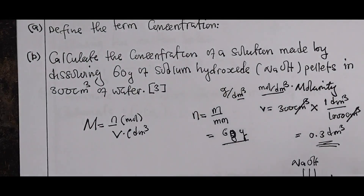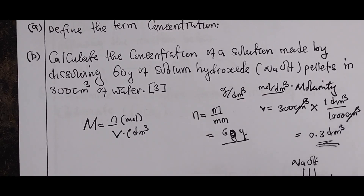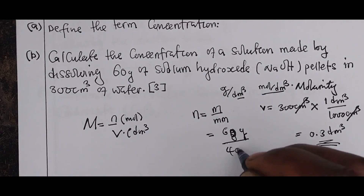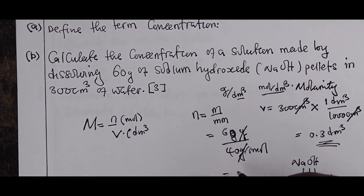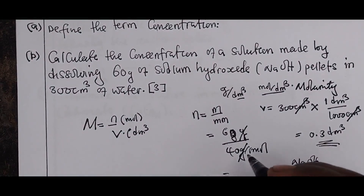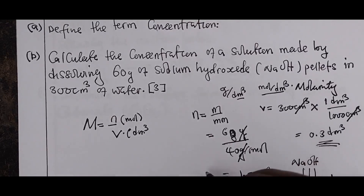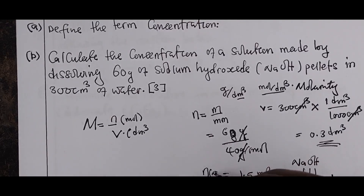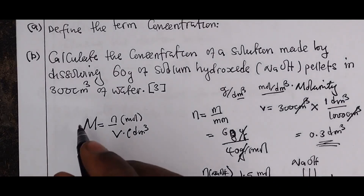The molar mass of NaOH is 40 grams per mole. So number of moles equals 60 divided by 40, which gives 1.5 moles. The number of moles of sodium hydroxide is 1.5 moles.